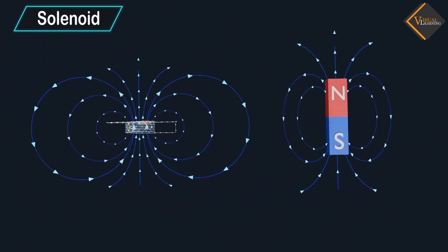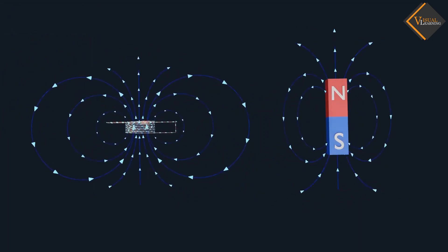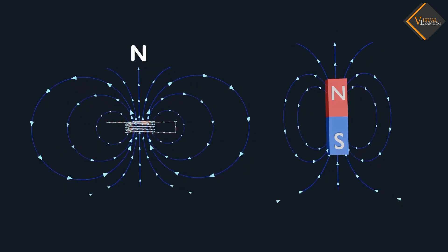Now, if we compare the pattern of the magnetic field of this solenoid with the magnetic field around a bar magnet, they look similar. In fact, one end of the solenoid behaves as a magnetic north pole while the other behaves as the south pole.